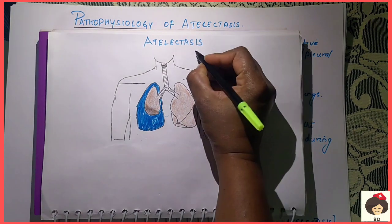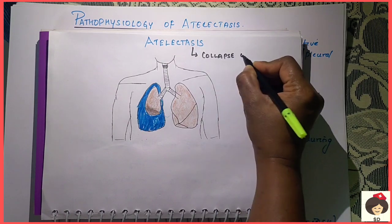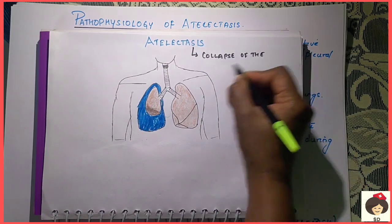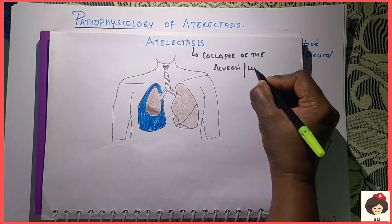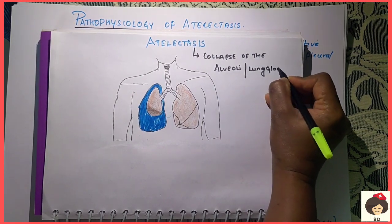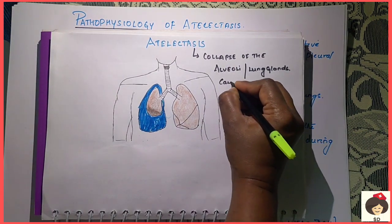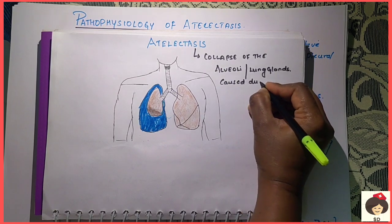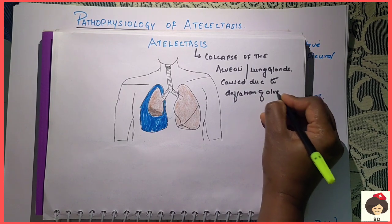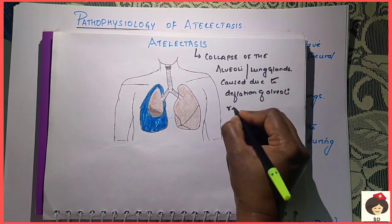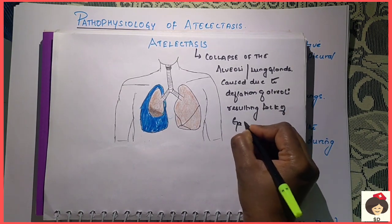So Atelectasis means — the definition is — it is collapse of the alveoli. Collapse of alveoli, also called lung glands, is called Atelectasis. This is caused due to deflation of the alveoli, resulting in lack of gas exchange.